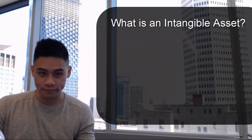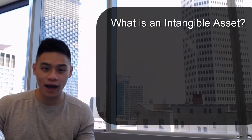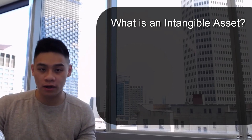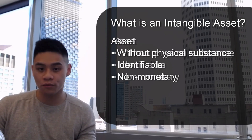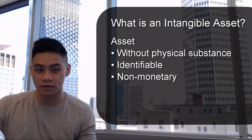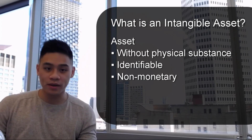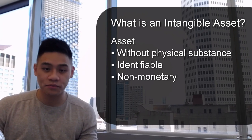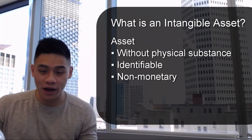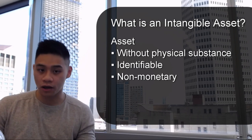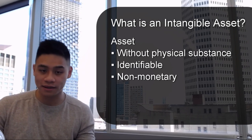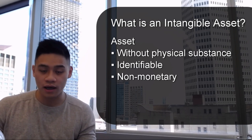In our first phase: what is an intangible asset? An intangible asset is an identifiable, non-monetary asset without physical substance. Identifiable means it can be separated from other assets or expenditures. Non-monetary means it is not readily converted to cash.